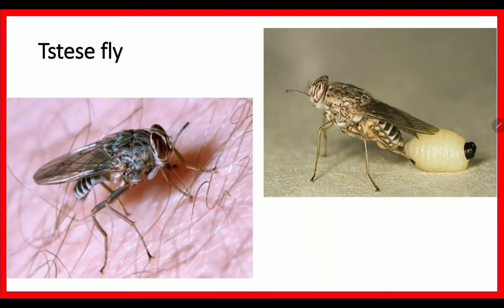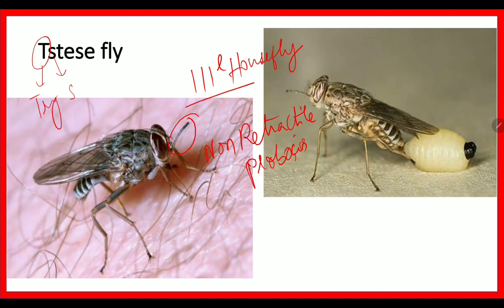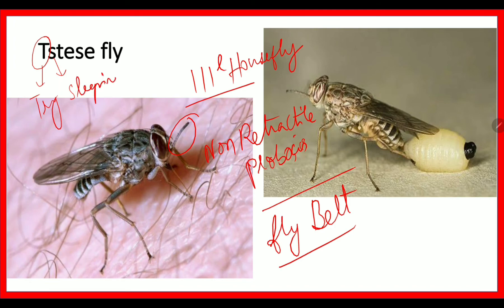Next is the tsetse fly. The tsetse fly is similar to the house fly, but has a non-retractile proboscis — this is a very important distinguishing feature because in the house fly it is a retractile proboscis, whereas here it is non-retractile. The disease caused by the tsetse fly is trypanosomiasis, also known as African sleeping sickness. It is seen in Africa, and the region where the tsetse fly is found is called the fly belt.